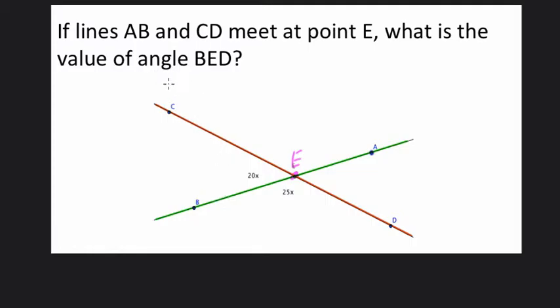What is the value of angle BED? This is B, E, D, right? So this angle right here. And they give us two algebraic expressions for these angles. Right here, this angle is 25X, and for this angle right here, they write 20X.